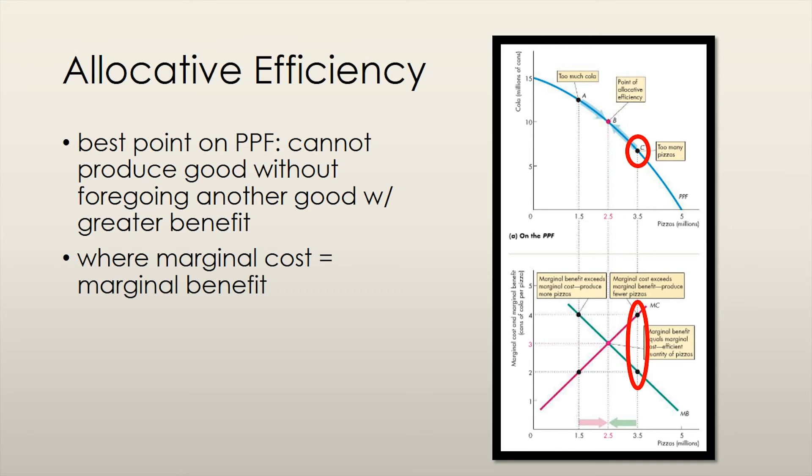The third point, at which 3.5 million pizzas are produced, is a point where the marginal cost of producing pizzas exceeds the marginal benefit. Pizza production costs more than people are actually willing to pay, so our resources would be better used if we produced less pizza.